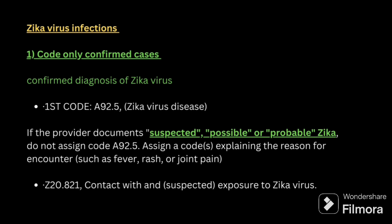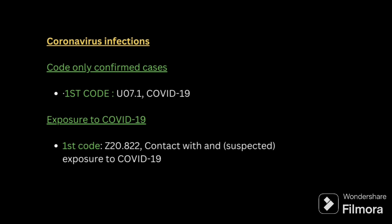Next: Zika virus. If Zika virus is confirmed, code A92.5. However, if the provider has documented Zika virus as suspected, possible, or probable, that code should not be assigned — instead, code for exposure: Z20.821.